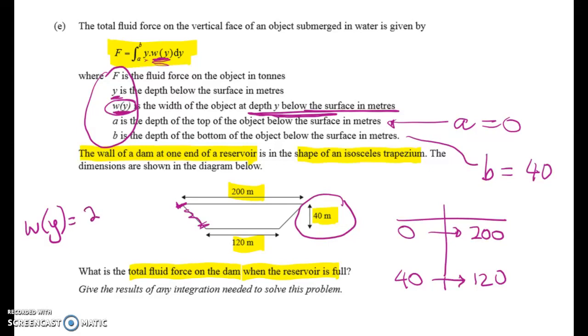And it's going to be 200 minus, well what's happened here, we've gone down 80, so we've dropped by 80 as the depth has gone down by 40. So it's going to be 200 minus 2Y.